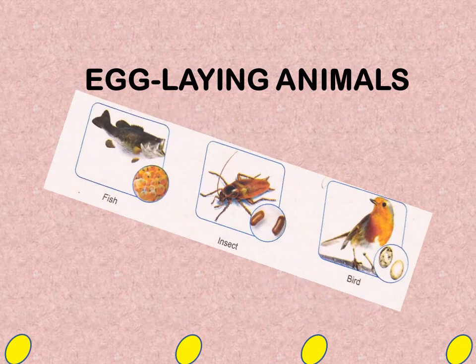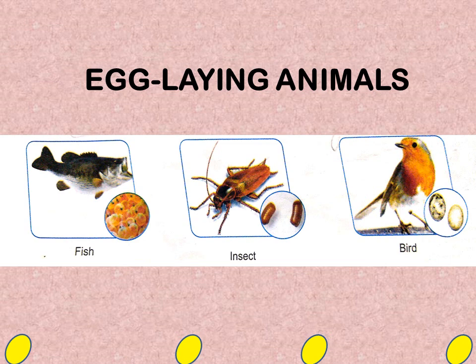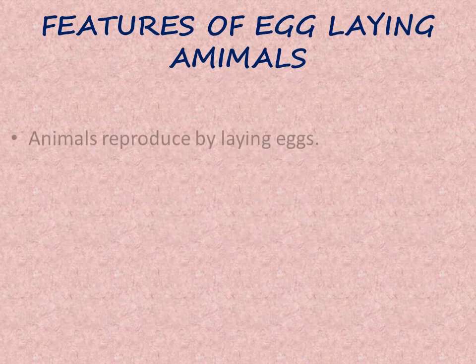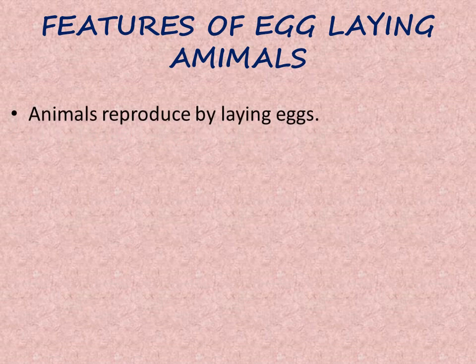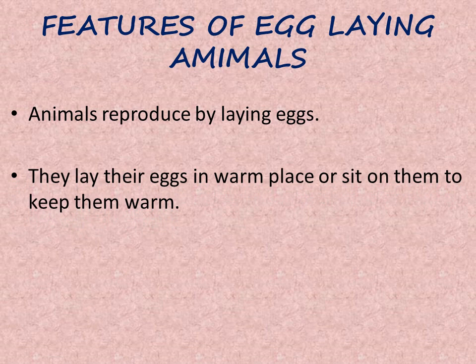Egg-laying animals. The animals which reproduce by the method of laying eggs — for example, fish, insects, birds — all lay eggs and then reproduce. Features of egg-laying animals: animals reproduce by laying eggs and they lay their eggs in a warm place or sit on them to keep them warm.